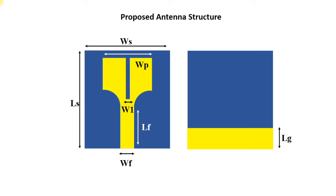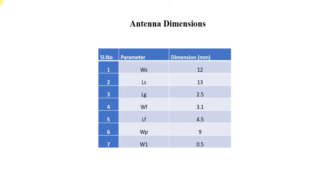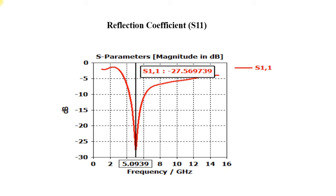All the dimensions are given here: LS is the length of the substrate, WS is the width of the substrate, WP is the width of the patch, and WF is the width of the feed where the signal is inserted. All corresponding values are shown here. Once we do the simulation, the resonant frequency is around 5.09 GHz, that is almost 5 GHz. 5 GHz is a free spectrum used for most wireless communications, especially Wi-Fi applications, which have a faster data rate.